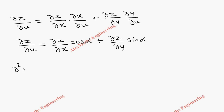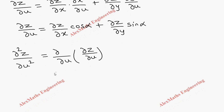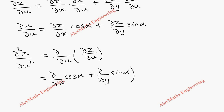So what we got is ∂z/∂u = ∂z/∂x · cos alpha + ∂z/∂y · sin alpha. Now we have to find its second derivative, that is ∂²z/∂u². This can be written as ∂/∂u of (∂z/∂u). We have two terms, both are ∂/∂u, but one is without z and the other is with z. So without z we write: ∂/∂x · cos alpha plus ∂/∂y · sin alpha, in brackets.